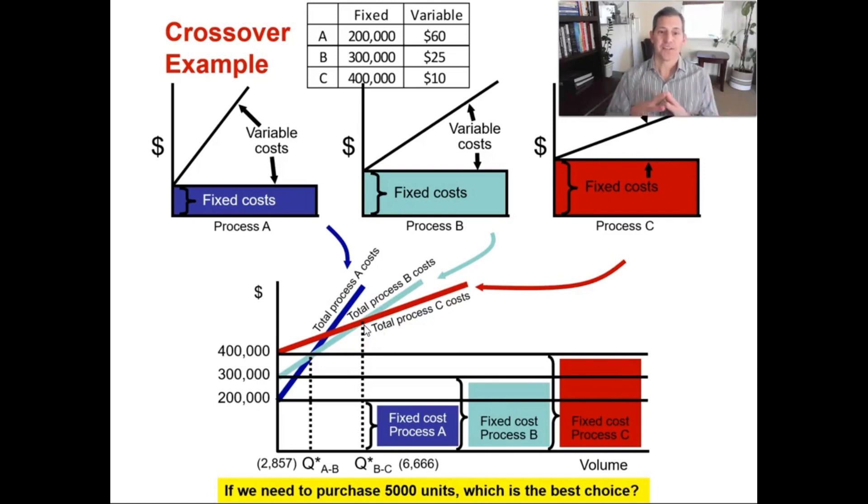If your process is going to yield less than 2,857 units, you buy software package A. If your process is going to yield between 2,858 and 6,665 units, then you would pick software package B. And if you believe that your output is going to be over 6,666 units, then you would pick software package C. That's what the crossover point analysis tells us. So for the question at the bottom, if we need to purchase 5,000 units, which one's the best choice? That would be software package B.